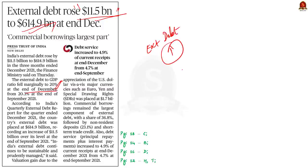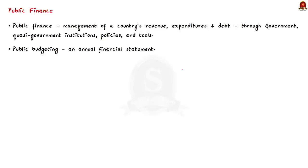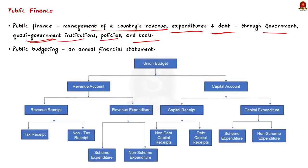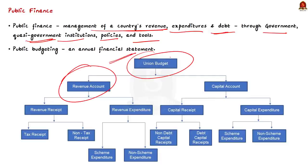To understand external debt, we must first know about public finance. Public finance is the management of a country's revenue, expenditures, and debt through various government, quasi-government institutions, policies, and tools. The components of public finance are public revenue, public expenditure, and public budget. Public budgeting plays an important role in deciding the growth of the country. The budget is an annual financial statement classified into two types: the revenue account and the capital account.